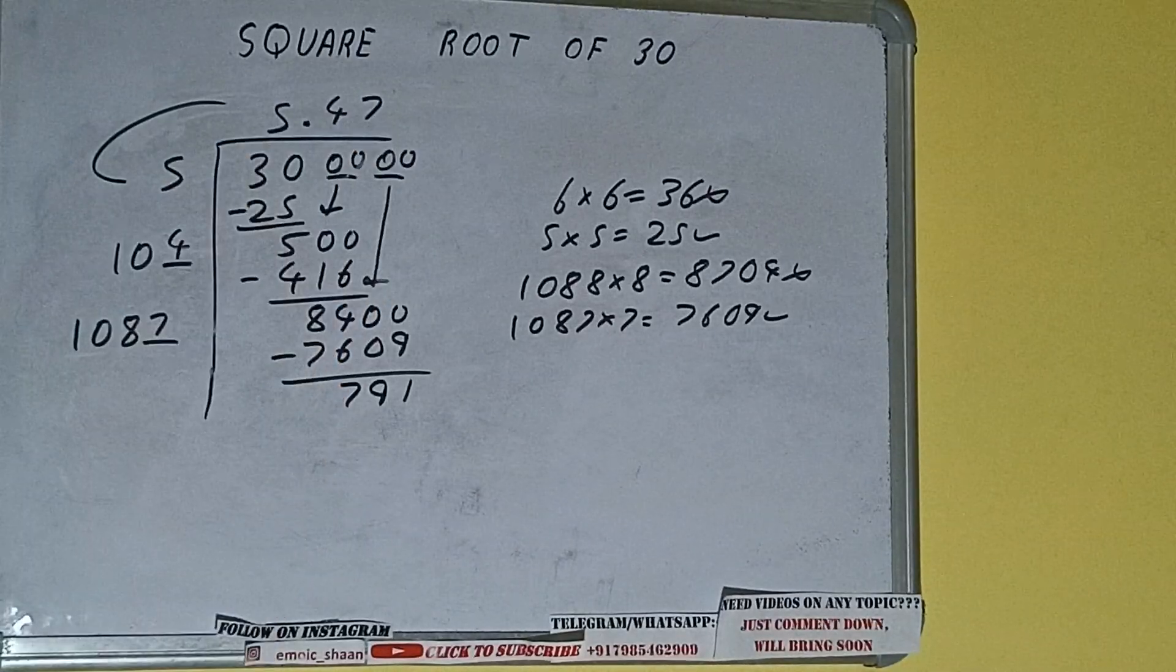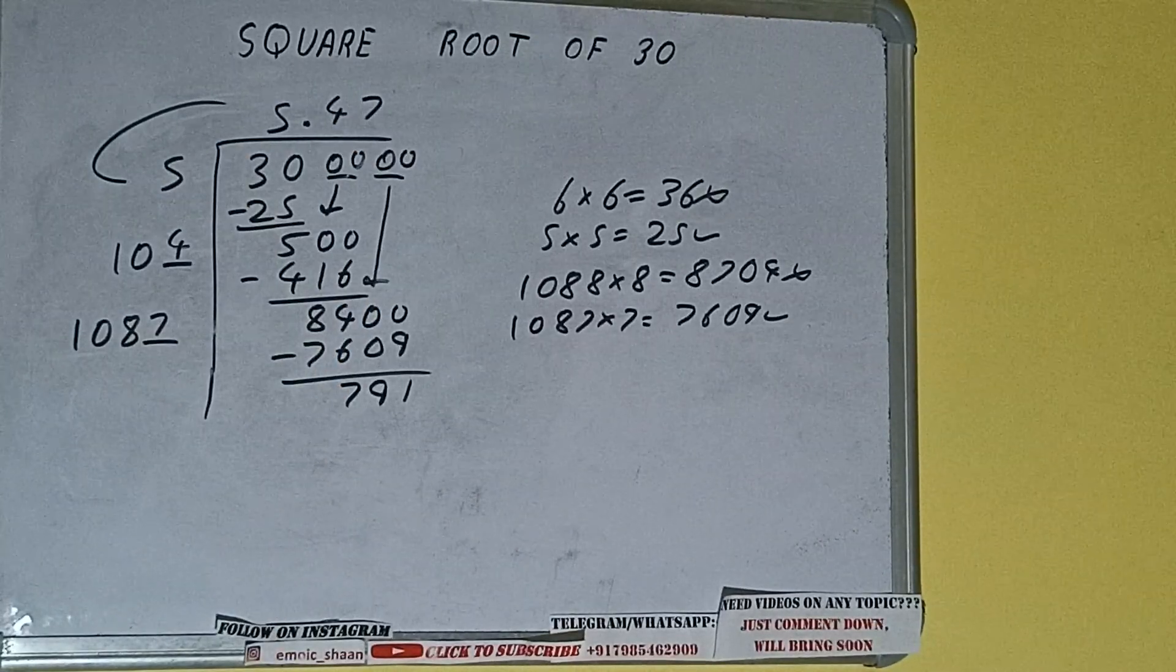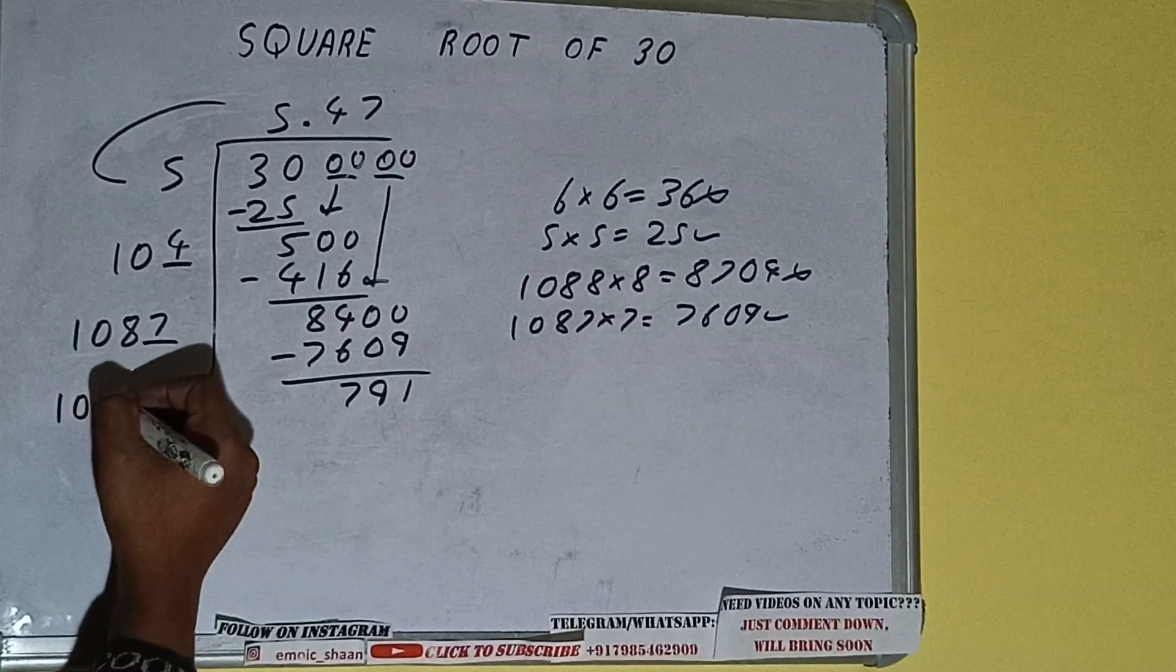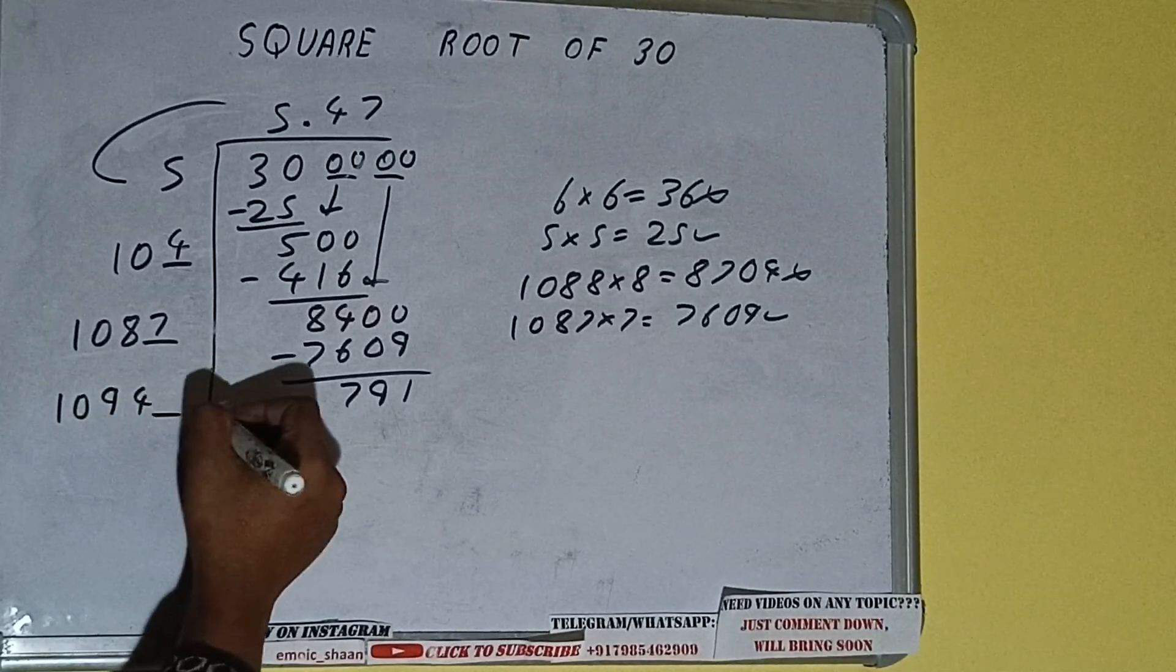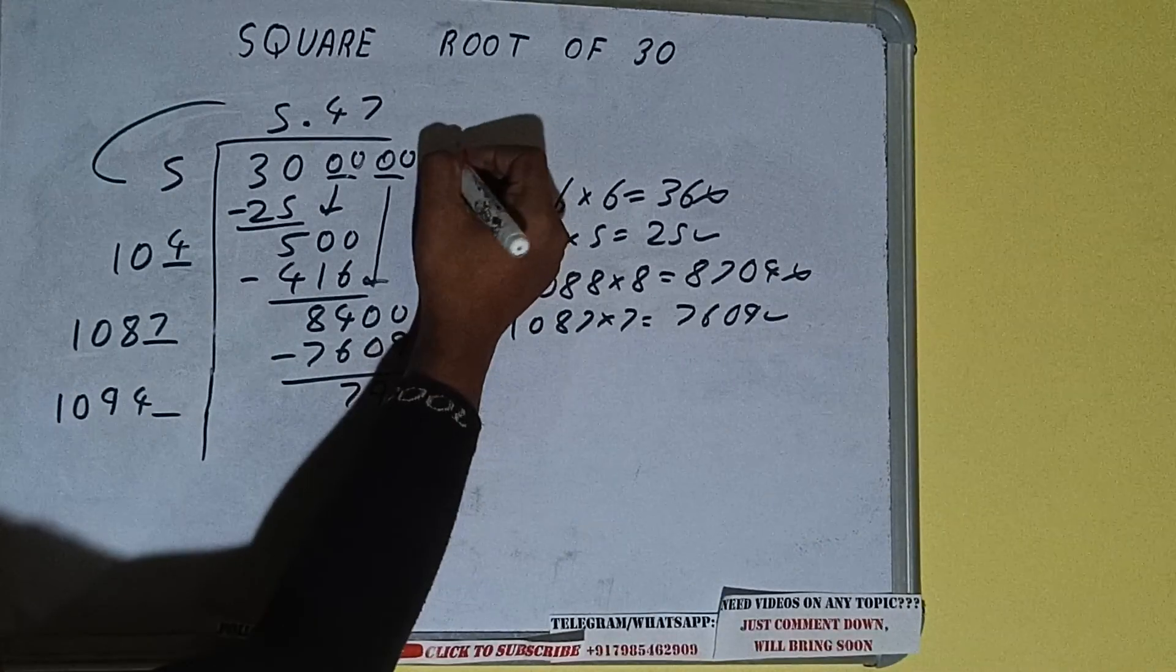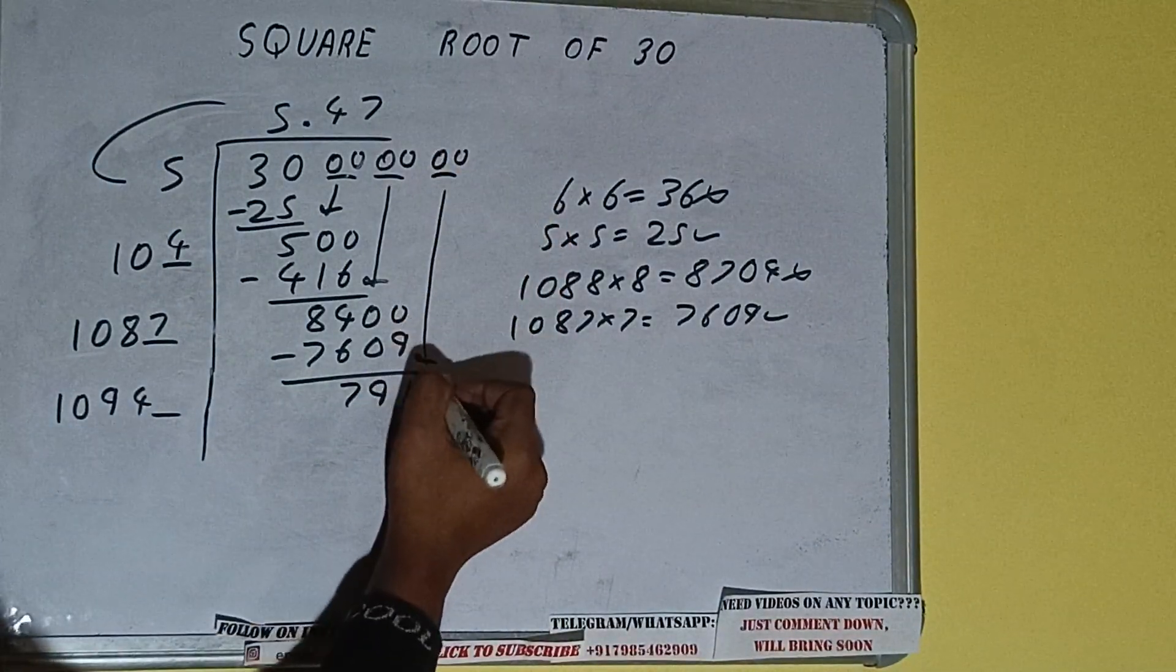into 7 we did, so add both. 1087 plus 7 will be 1094, and one digit extra. This number we need to make it big, so bring the next pair of zeros down and it will be 79100.